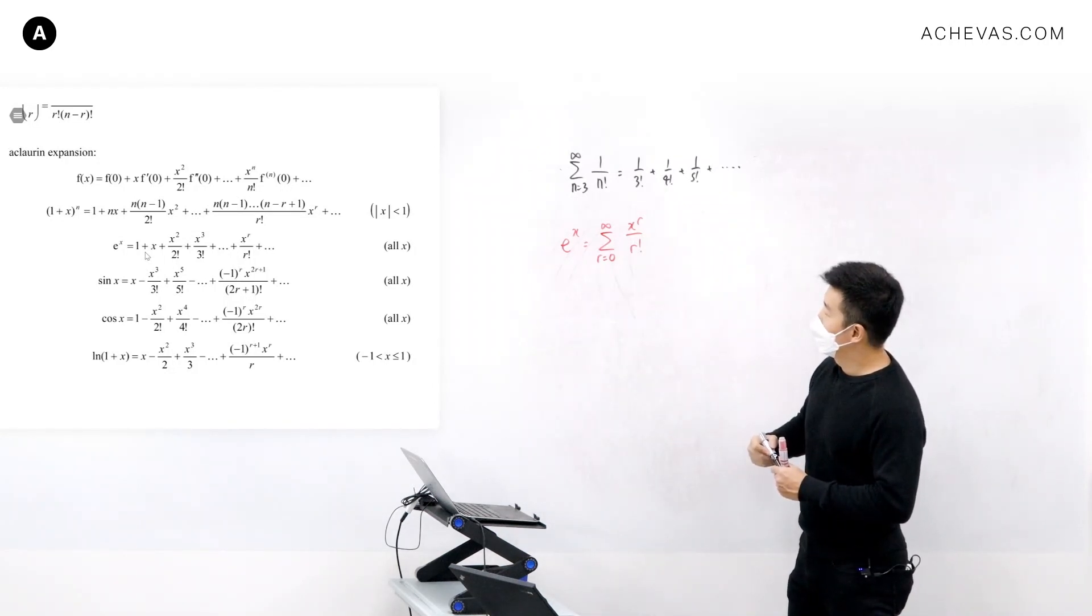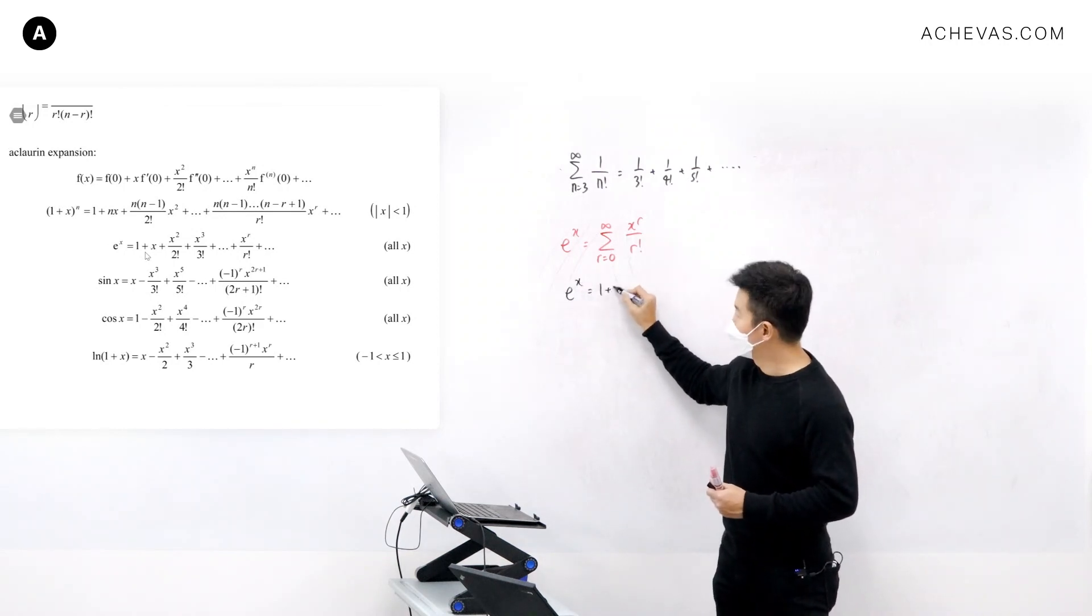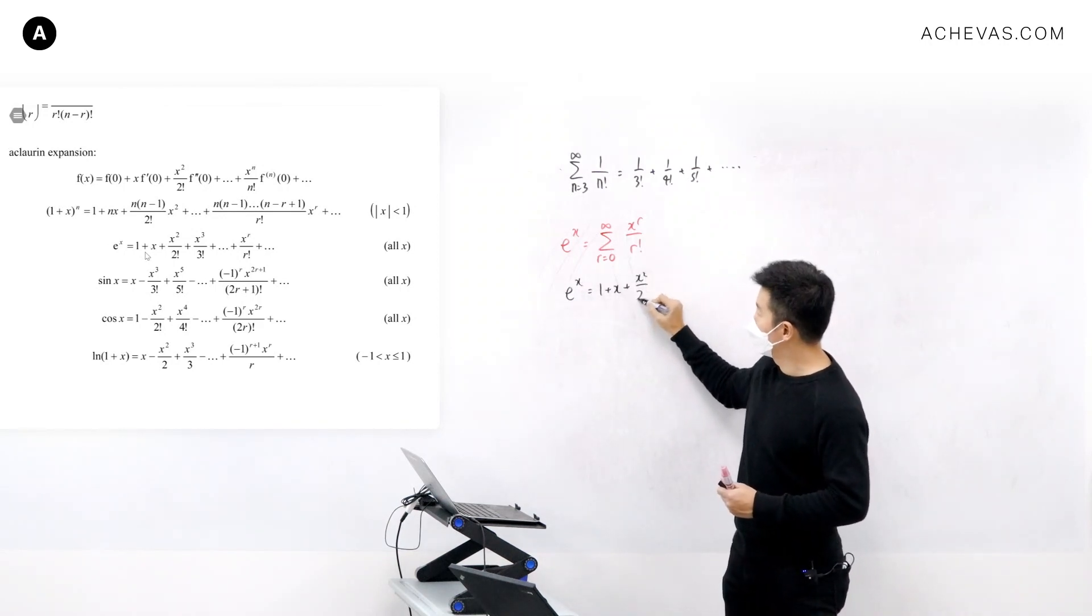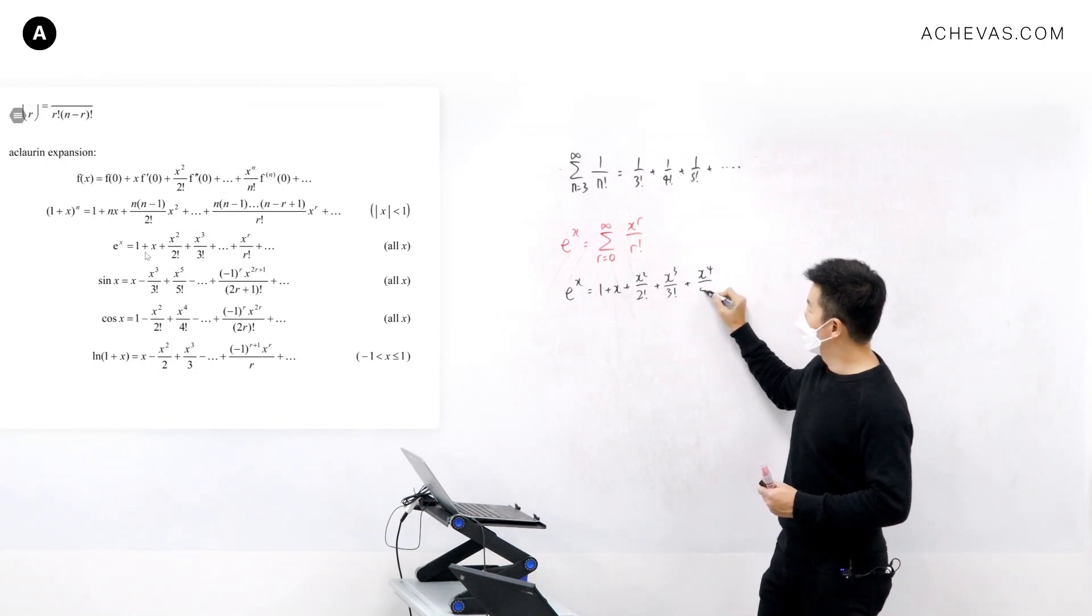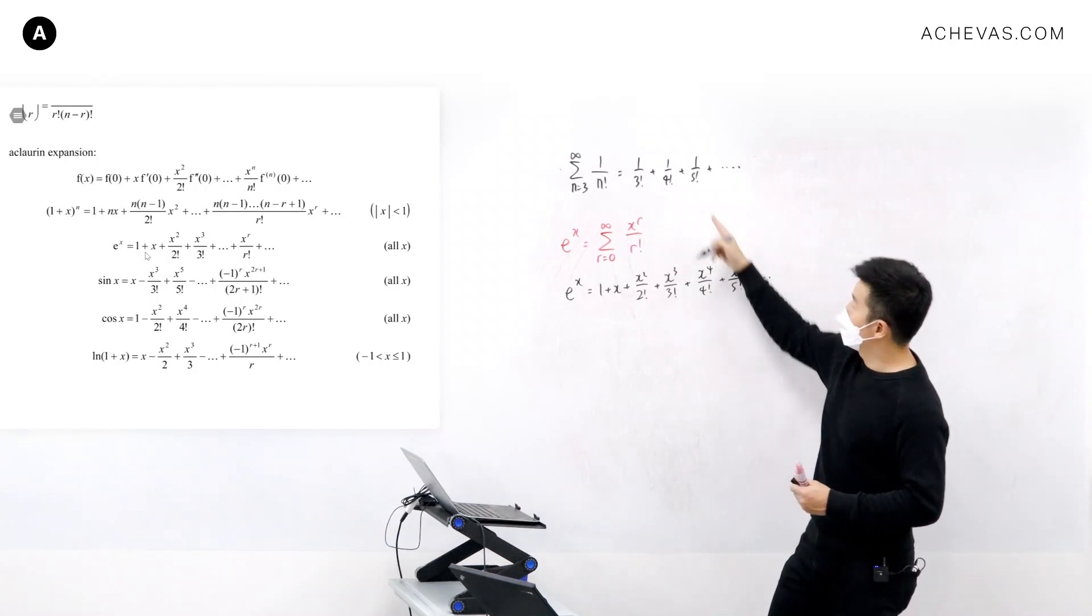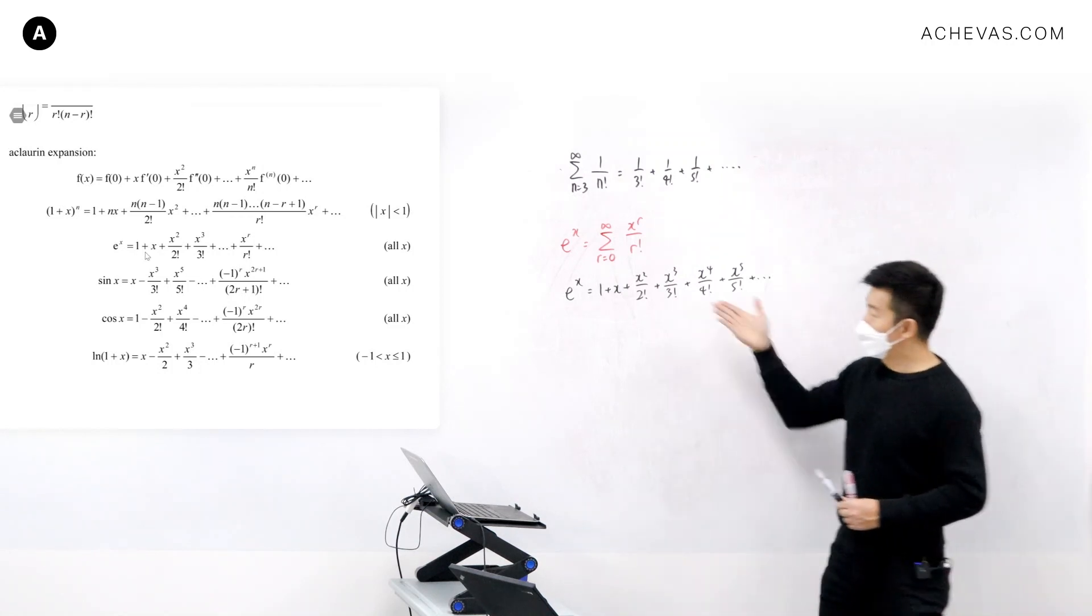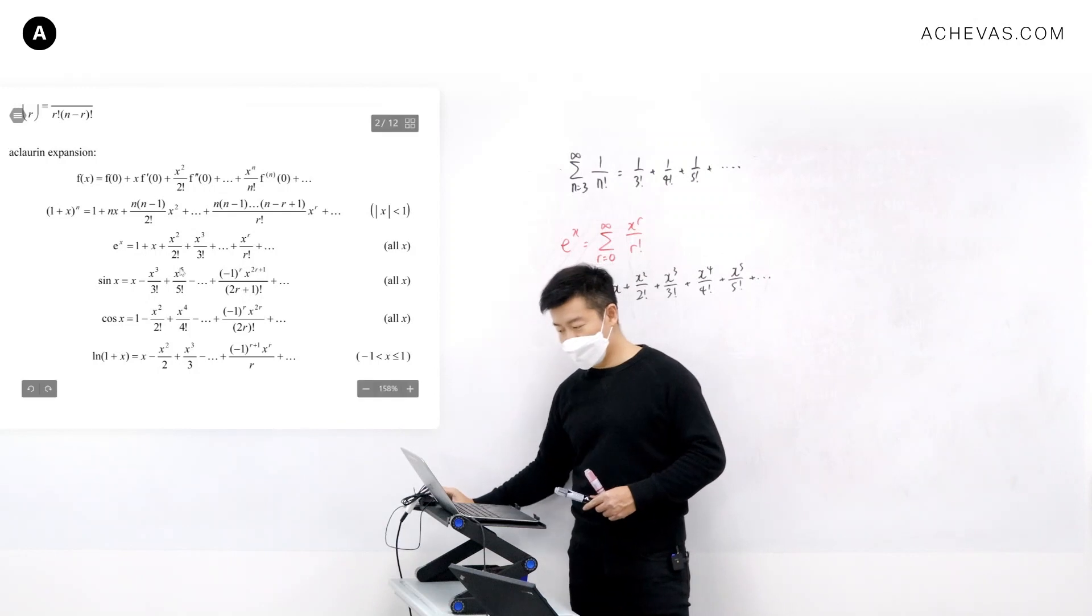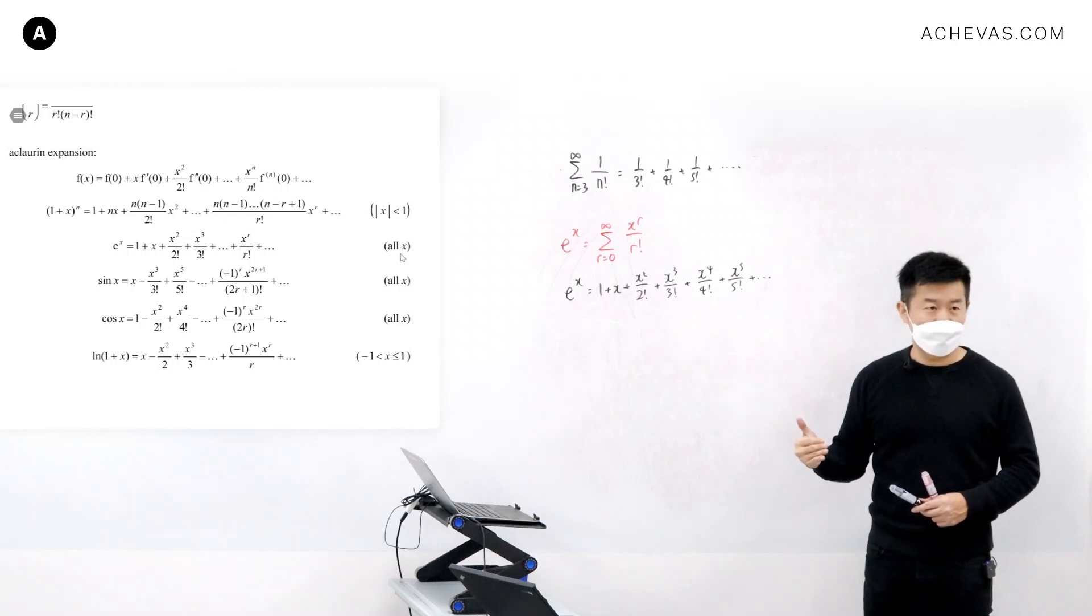And e to the power of x is equal to 1 plus x plus x squared over 2 factorial plus x cubed over 3 factorial plus x to the power of 4 over 4 factorial, x to the power of 5 over 5 factorial, all the way on to infinity. Looks very, very similar to this. And to apply this, the MF26 even give me what kind of x this can adopt. This can adopt all x, any x. It can adopt all x, whatever that I want. It doesn't really matter.